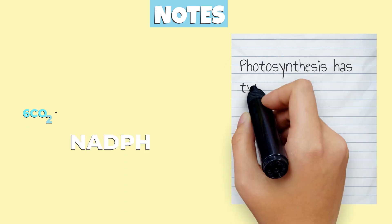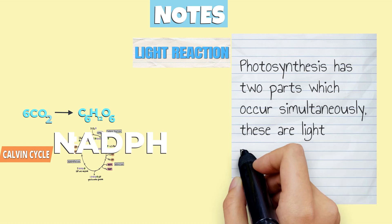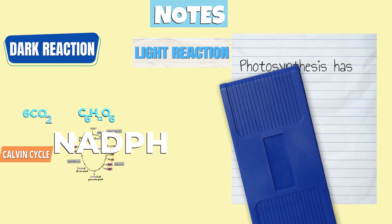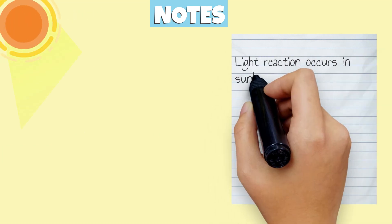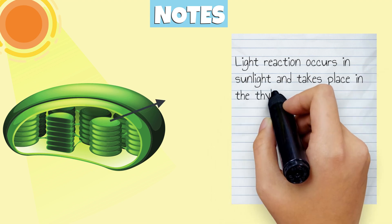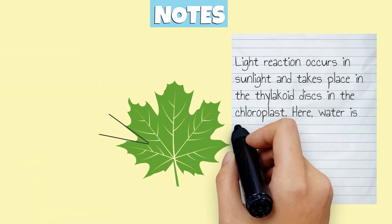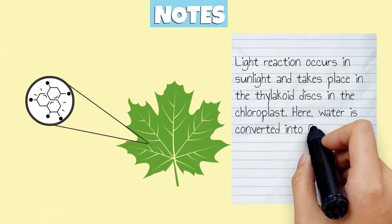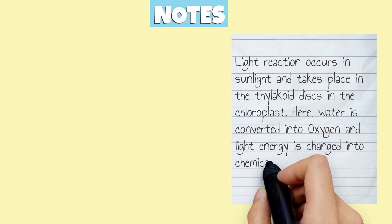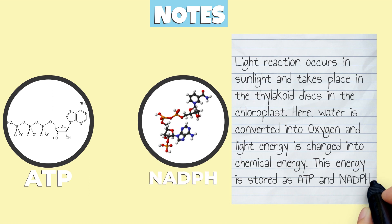Photosynthesis has two parts which occur simultaneously: light reaction and dark reaction. Light reaction occurs in sunlight and takes place in the thylakoid disc in the chloroplast. Here, water is converted into oxygen and light energy is changed into chemical energy. This energy is stored as ATP and NADPH.